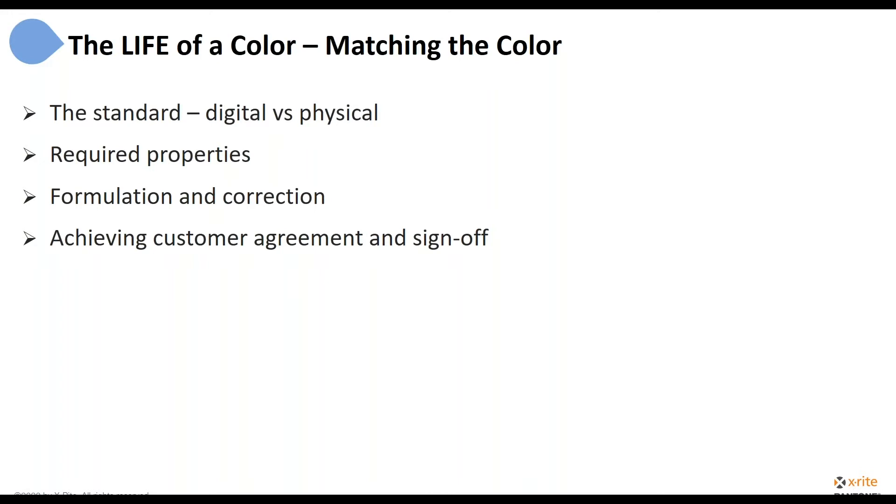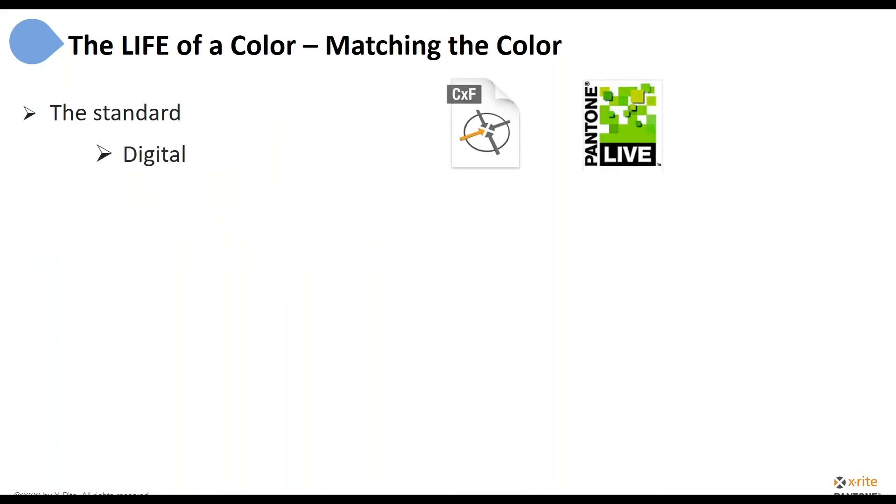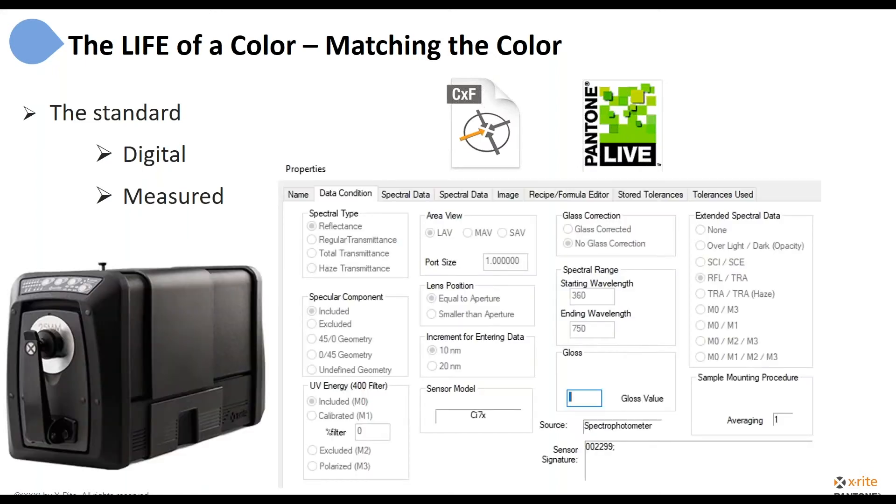Then we're going to talk about how we formulate and correct our formulas, adjust them, and then how do we achieve a customer agreement and sign off, because that would mean we're ready to go to production. So the standard, it might be digital. It might be sent to us as a CXF file, which is a digital way to exchange color data. It might be sent to us as a Pantone color, so we might use Pantone Live. Those are two ways to digitally import the data. It might be something that we're going to measure and we might use something like this, like a benchtop device or a handheld device where we're going to take a physical measurement of the product that we've been provided.